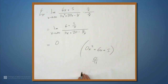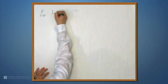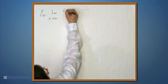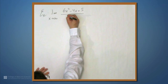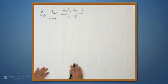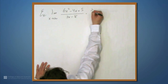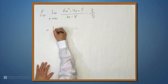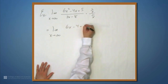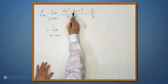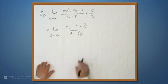Let's do one more example: the limit as x approaches infinity of 6x squared minus 4x plus 5 in the numerator, and 11x minus 8 in the denominator. Here we'll want to cancel the x, so we'll again multiply by 1 over x over 1 over x. We get the limit as x approaches infinity of 6x minus 4 plus 5 over x, all over 11 minus 8 over x.